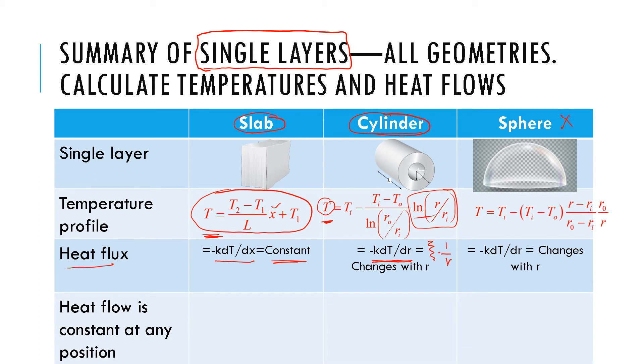And likewise for the spherical coordinate, if you do minus k dT/dr, you notice that it's not a constant. If you take d/dr of this, it's not a constant, so the flux will also change with radius.